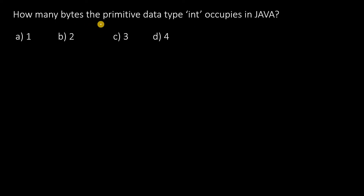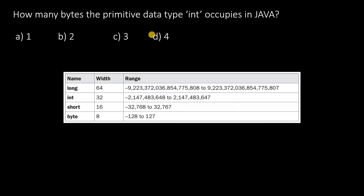How many bytes does the primitive data type integer occupy in Java? The answer is 4 bytes. Remember: long occupies 64 bits that is 8 bytes, integer occupies 32 bits that is 4 bytes, short occupies 2 bytes, and byte occupies 1 byte.